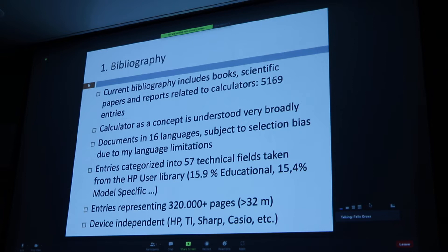In the bibliography on your stick there's a breakdown by subject. Not surprisingly, almost 16% is educational, 15% is model-specific, and then there's a wide range from astronomy to forestry and agriculture and much more. The entries represent about 320,000 pages — a rough estimate. If you want to print that out, you'd end up with something like 32 meters — about 100 feet — of printouts stacked up.